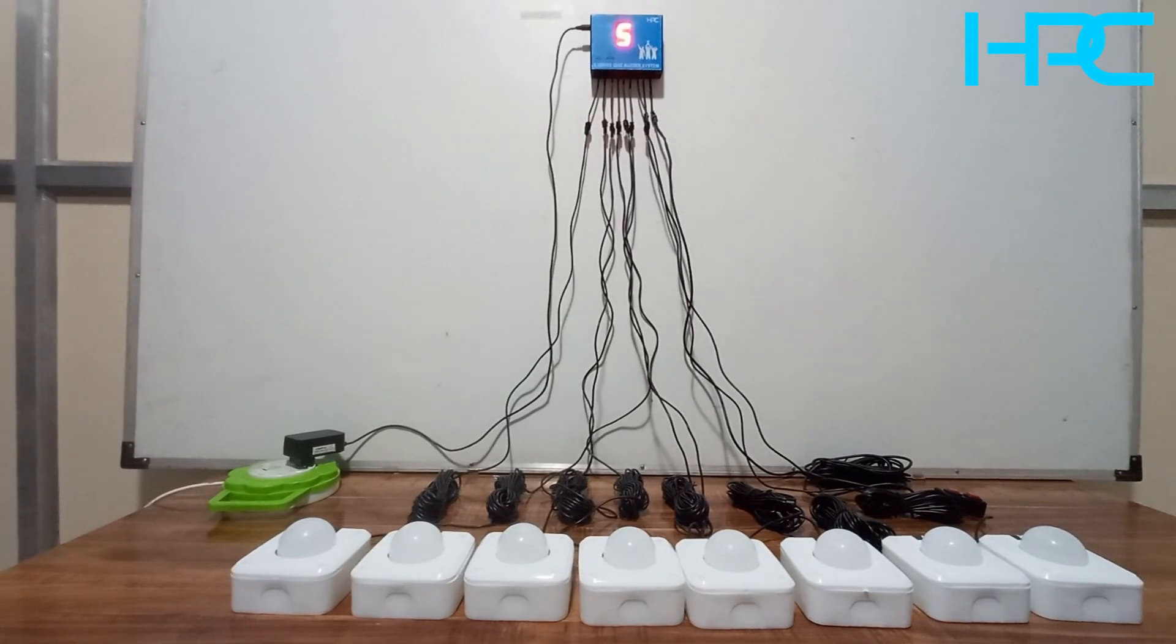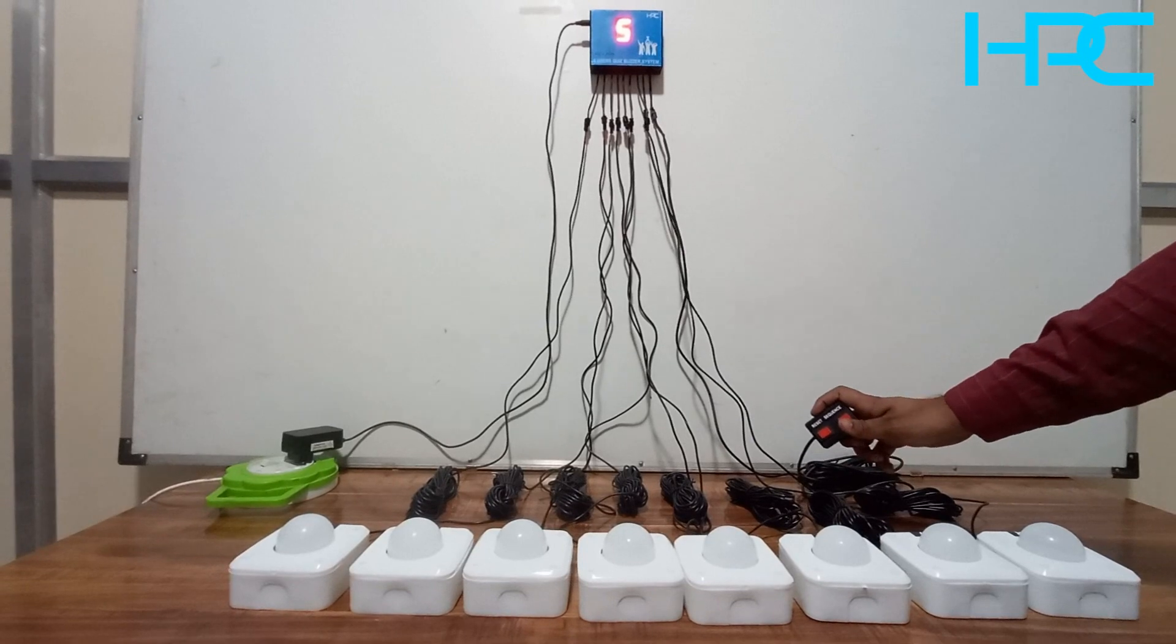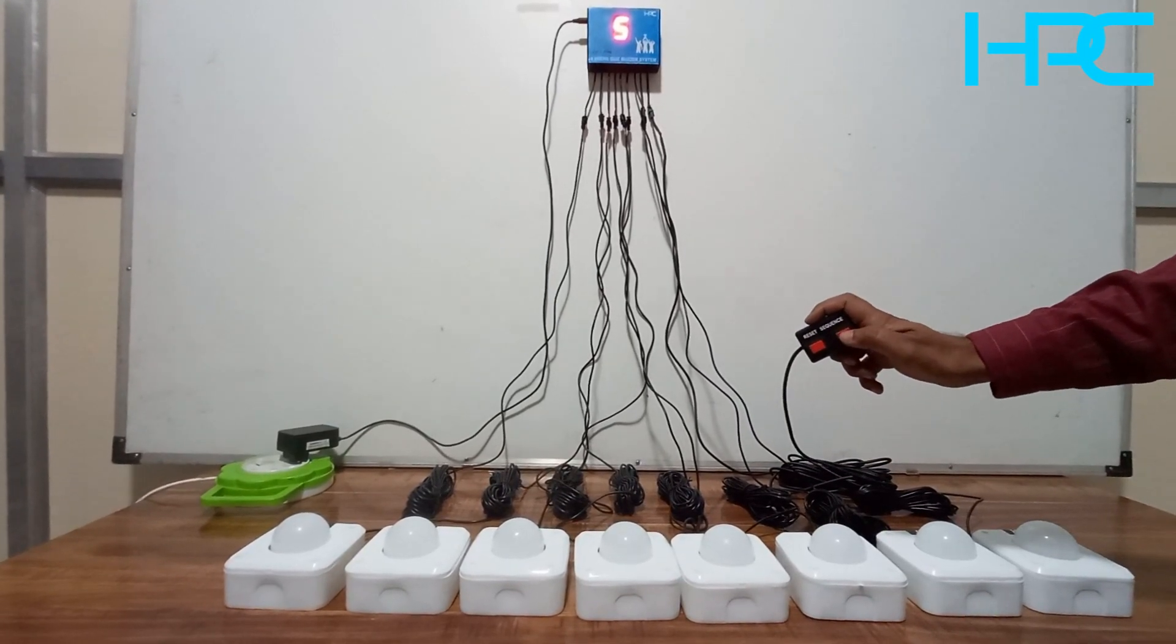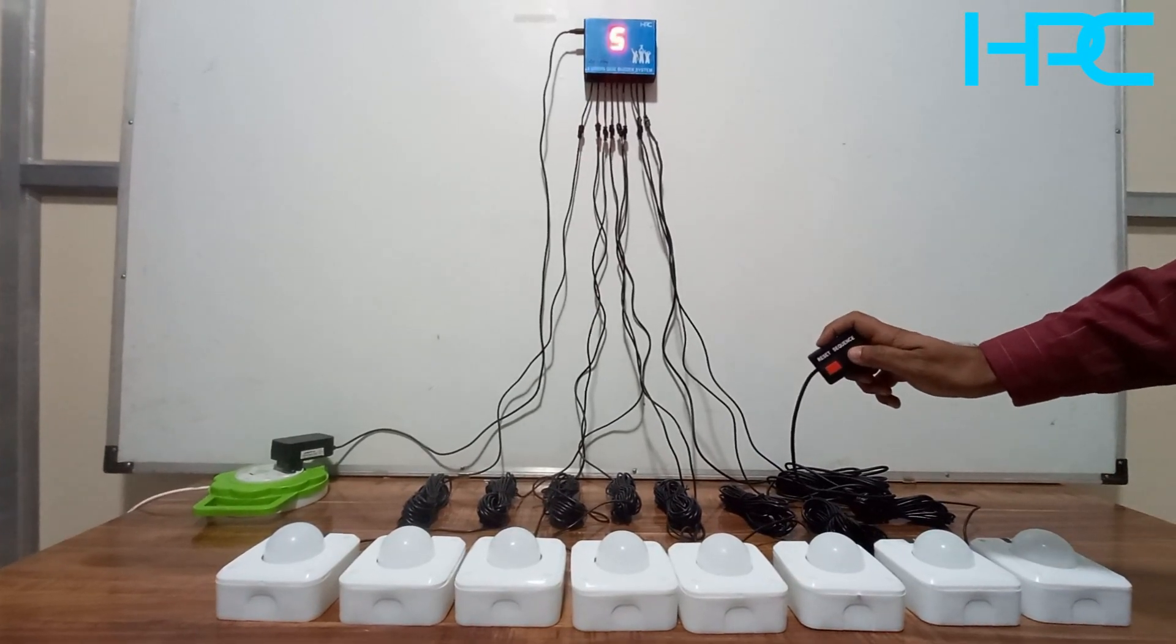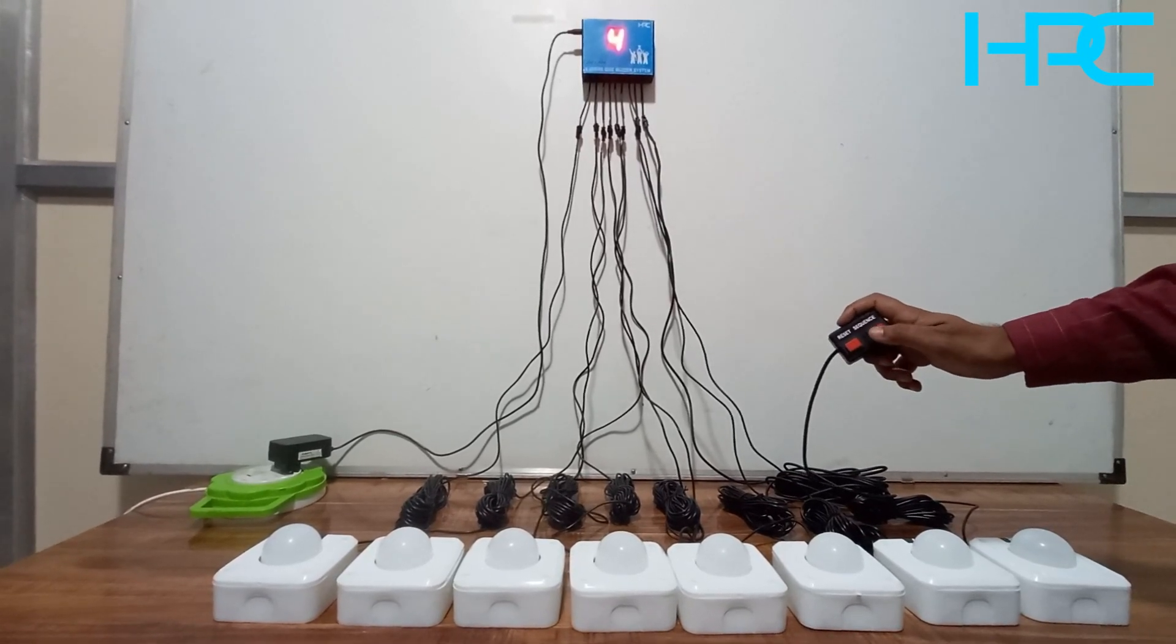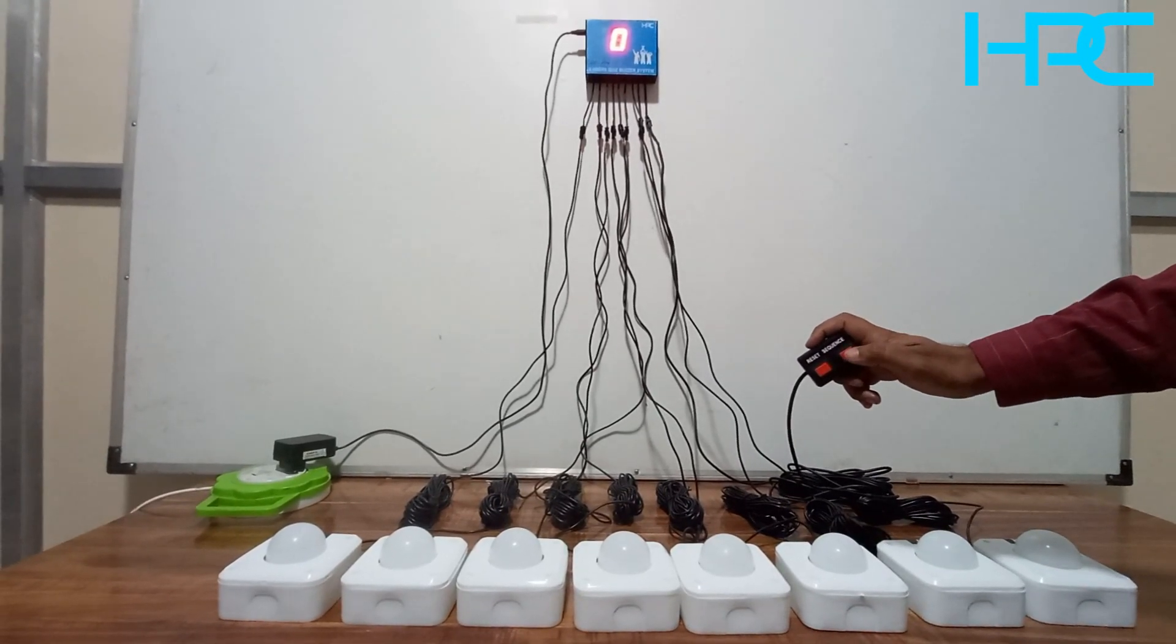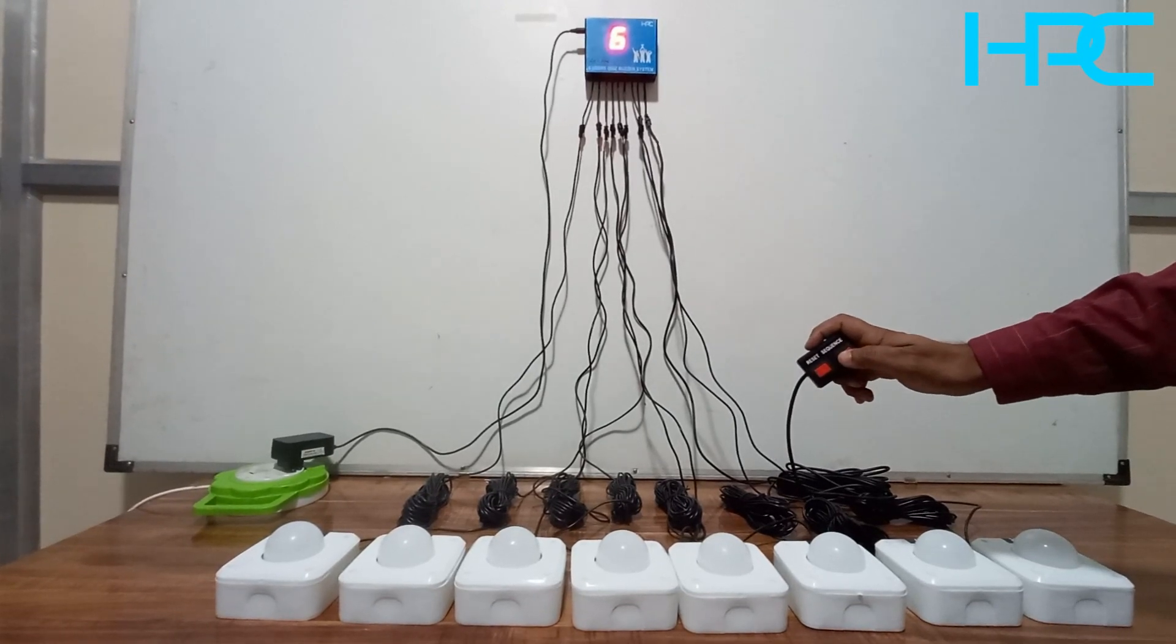If you want to check the other sequence, just press the sequence button from the reset sequence remote. If I press the sequence, first you will see 0, then who has pressed the button first, that is number 5, then who pressed second, then third. In this way you can check the sequence, which is separated by 0. Again, who has pressed the button first. So in this way, this sequence button works.